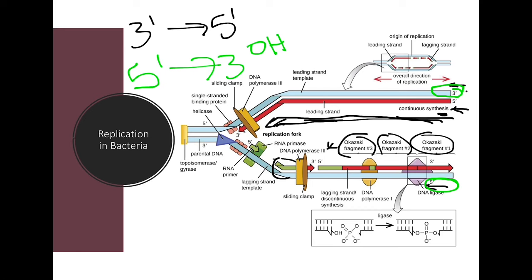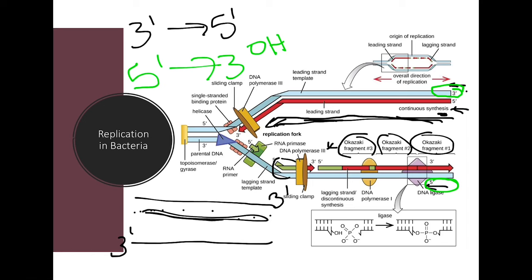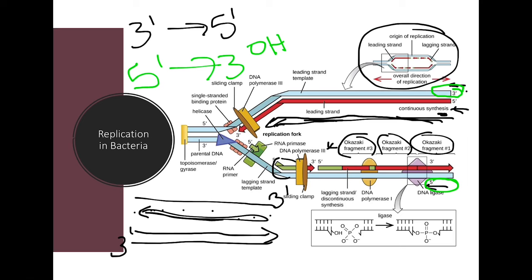It would not be a problem if the DNA was fully unwound before replication started, because then the 3 prime ends could each synthesize in the proper direction. But DNA does not unzip completely before replication starts — it opens up and replication starts as it opens. So here is how that problem is actually solved.